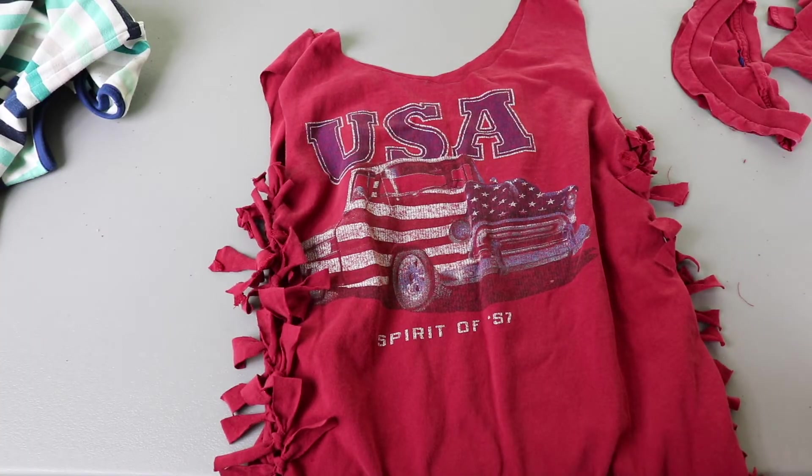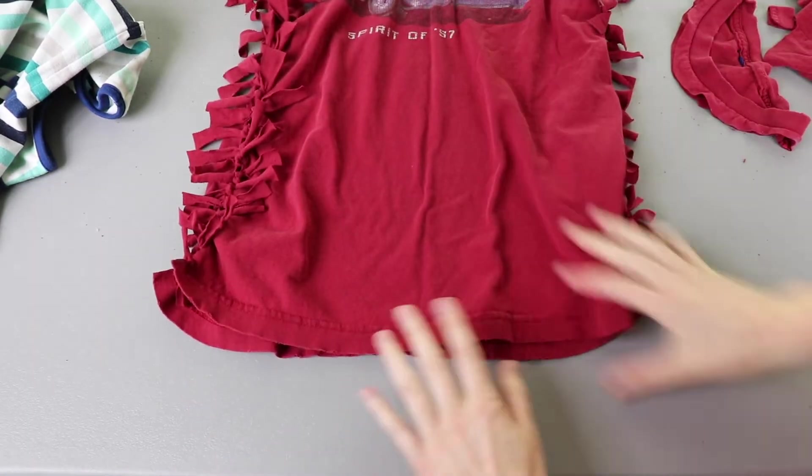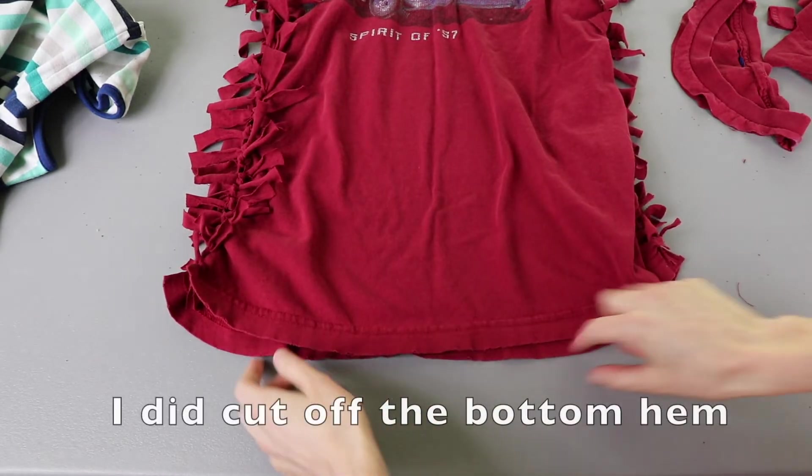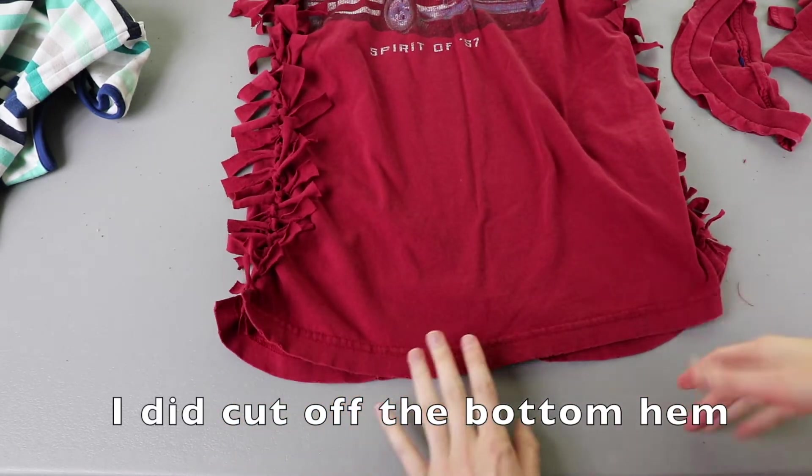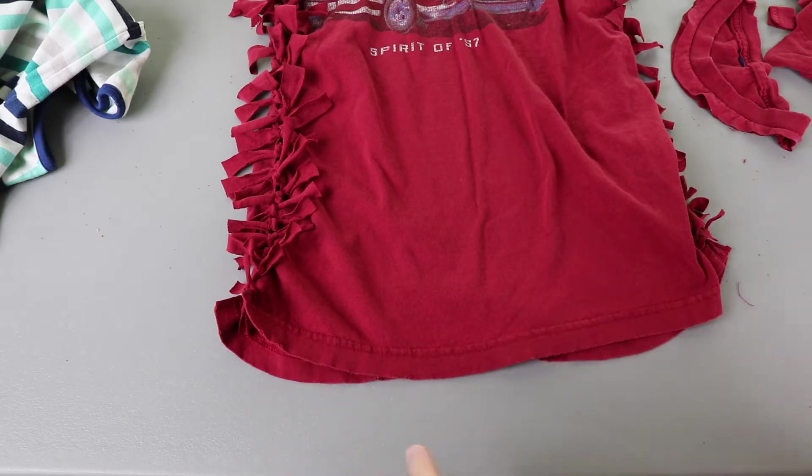So here's the tank top. I'm going to try this on for fit and I'll show you how it looks and I may also decide to cut off the bottom because this hem is just kind of yucky looking. And of course you could fringe the bottom or do the bottom however you want it to look.